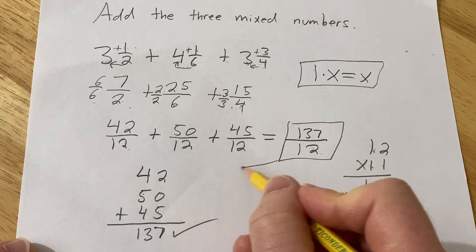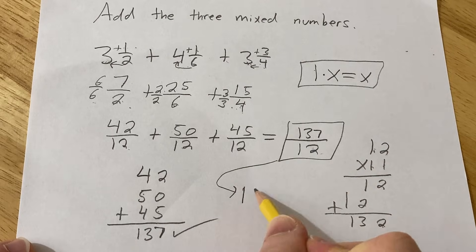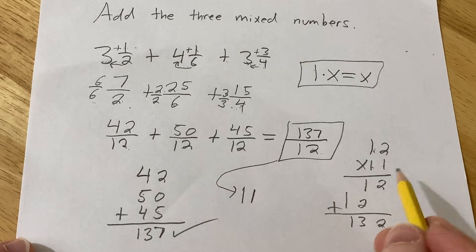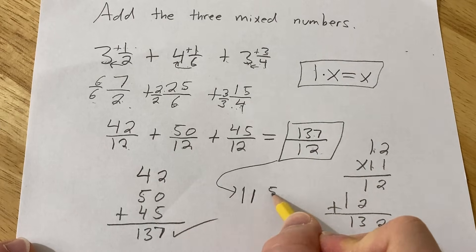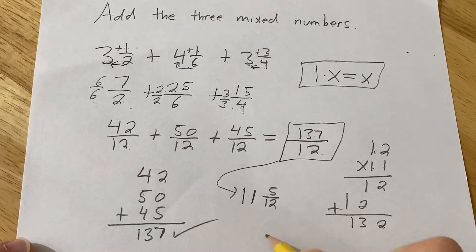So this is going to be equal to 11, that's how many times 12 goes into 137. And what's left over? 5 twelfths. So 5 is the remainder, so 5 twelfths. So we can write it like that.